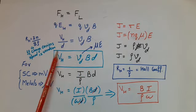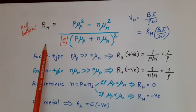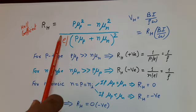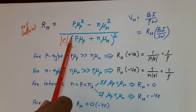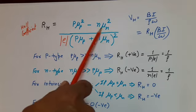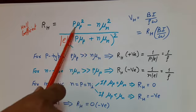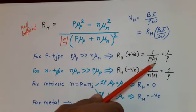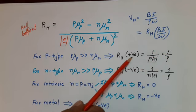We define one more parameter: the Hall coefficient, denoted by RH. RH = (P·μP² − N·μN²) / [|e| · (P·μP + N·μN)²]. If the material is P-type, holes are majority carriers and P·μP >> N·μN. Neglecting N·μN, RH comes out positive and equals 1/(P·|e|). Since P·|e| is the volume charge density ρ due to holes, RH = 1/ρ, and it is positive for P-type semiconductor.